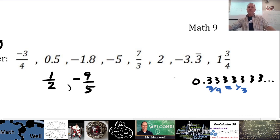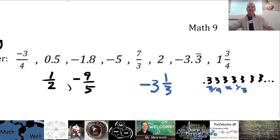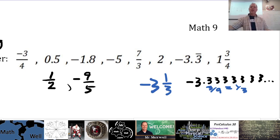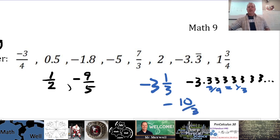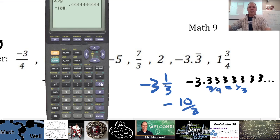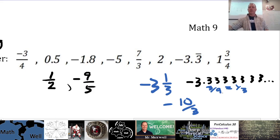So we know that 0.3 repeating is one-third, meaning negative 3.3 repeating is negative 3 and one-third. To turn that into an improper fraction: 3 times 3 plus 1 is 10 over 3. Let's double-check: negative 10 divided by 3 is negative 3.3 repeating. So that's confirmed. Also, 0.6 repeating is 6 over 9 or two-thirds. Those are good ones to know.